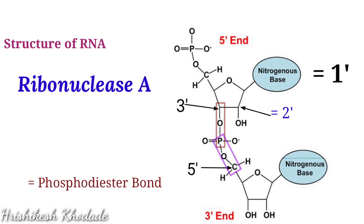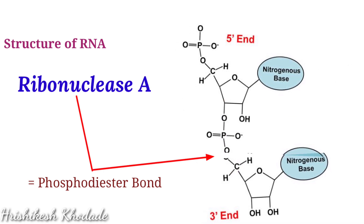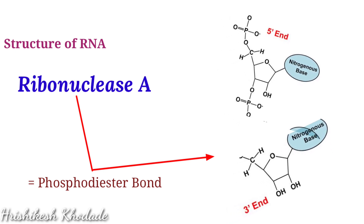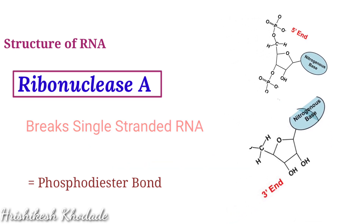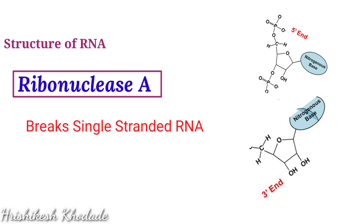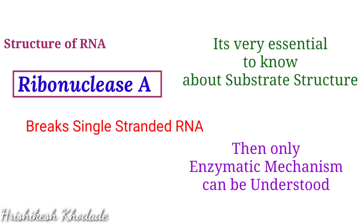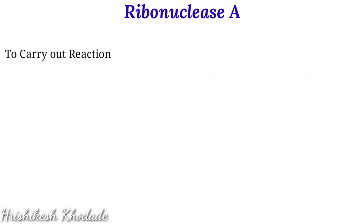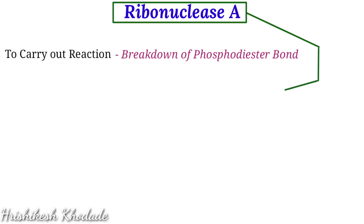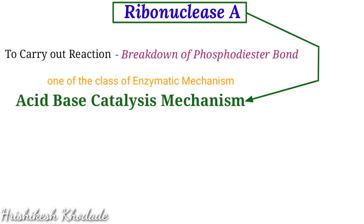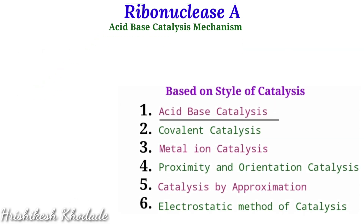Ribonuclease A enzymes are famous for breaking this phosphodiester bond, thereby separating nucleotides from each other in a single RNA molecule. To carry out the breakdown of the phosphodiester bond, ribonuclease A shows acid-base catalysis mechanism, which is the first type of enzymatic mechanism class we just discussed.